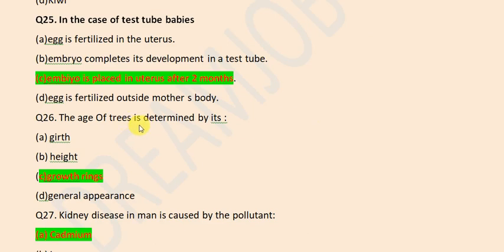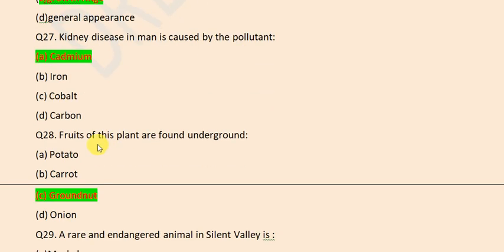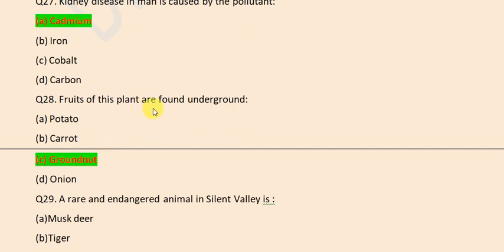The age of trees is determined by its growth rings. Kidney disease in man is caused by the pollutant cadmium. Fruits of plants are found underground in groundnut.